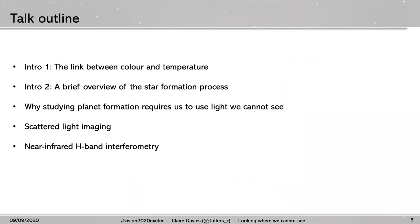With the introductions out of the way, let's get an idea of what I'm going to be talking about. I'll be providing a bit of background to some of the astronomical concepts, just so we're all on the same page. The first concept I'll be introducing is the link between color and temperature. Afterwards, I'll guide you through an overview of how stars form. I'll show you why studying planet formation requires us to use light which we cannot see with our eyes, and I'll detail two techniques which I personally use: scattered light imaging and near-infrared H-band interferometry.